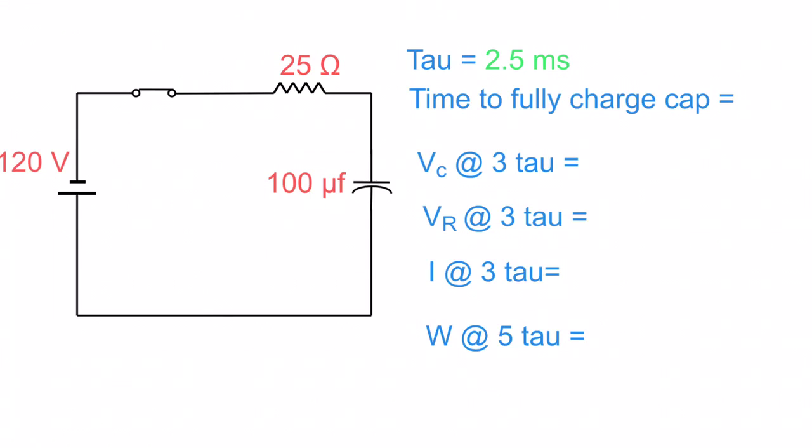Now, time to full charge. All we have to do is take this number here and multiply that by 5, because it takes 5 time constants to reach full charge. So 5 times 2.5 gets us 12.5 milliseconds. So we got those two down.